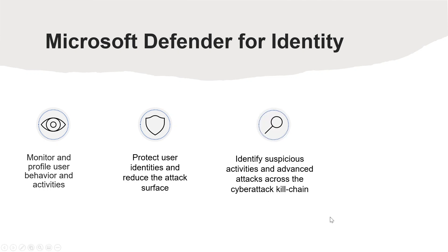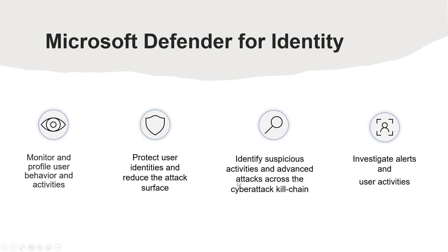The next capability is to Identify suspicious activity and advanced attacks across the cyber attack kill chain. Defender for Identity identifies reconnaissance, compromised credentials, lateral movements, and domain dominance at the source throughout the entire cyber attack kill chain. Finally, you can use Defender for Identity to investigate alerts and user activities. Microsoft Defender for Identity protects your organization from compromised identities, advanced threats, and malicious insider actions.